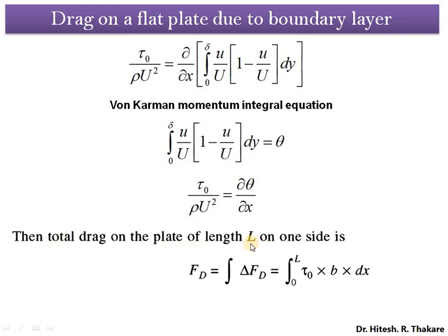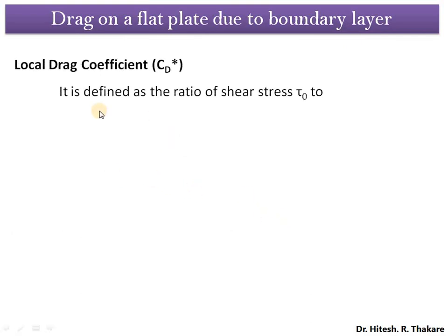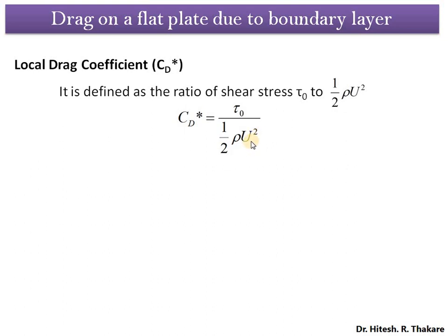The total drag force on the entire plate of length L is calculated as F_D = integral from 0 to L of tau_0 × B dx. The next parameter is the local drag coefficient, defined for a particular location on the flat plate as the ratio of shear stress tau_0 to the dynamic pressure: Cd* = tau_0 / (½ρU²). The quantity ½ρU² includes a term of U² — similar to the kinetic energy expression — and is known as dynamic pressure, a pressure associated with a flowing fluid.